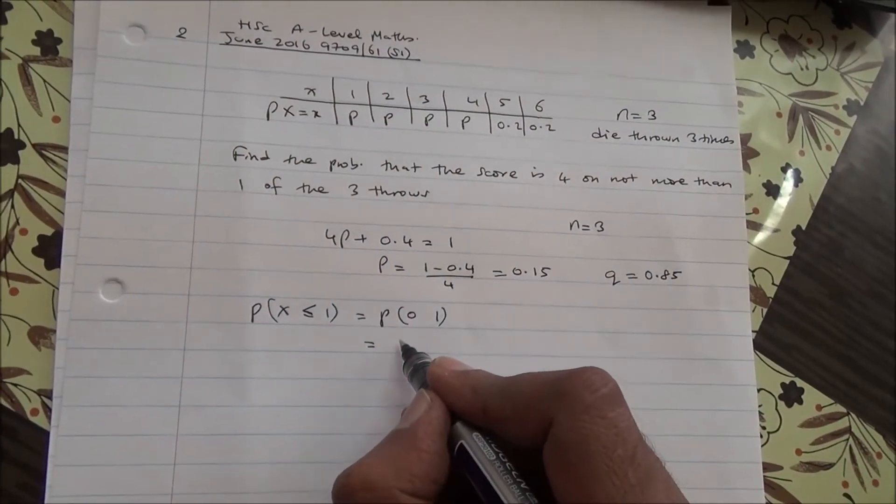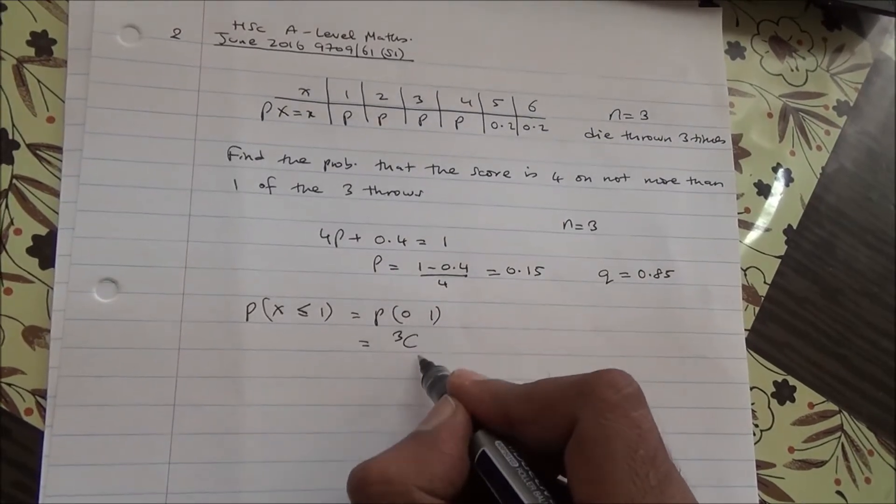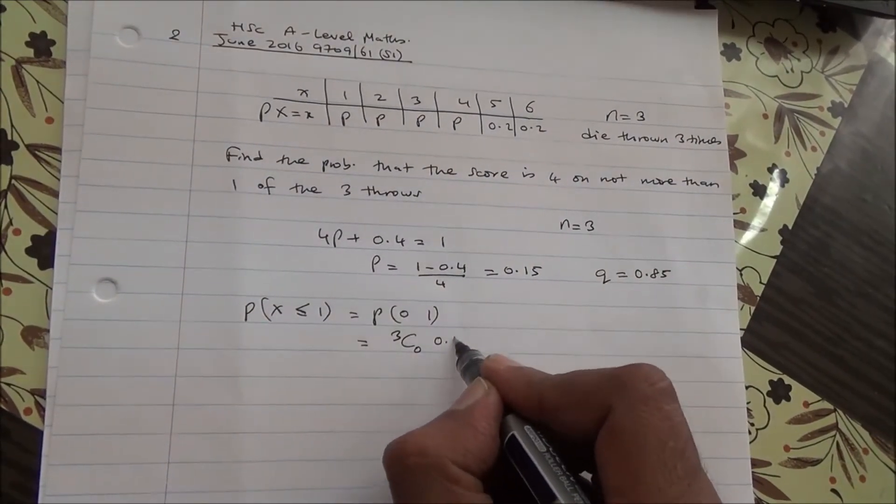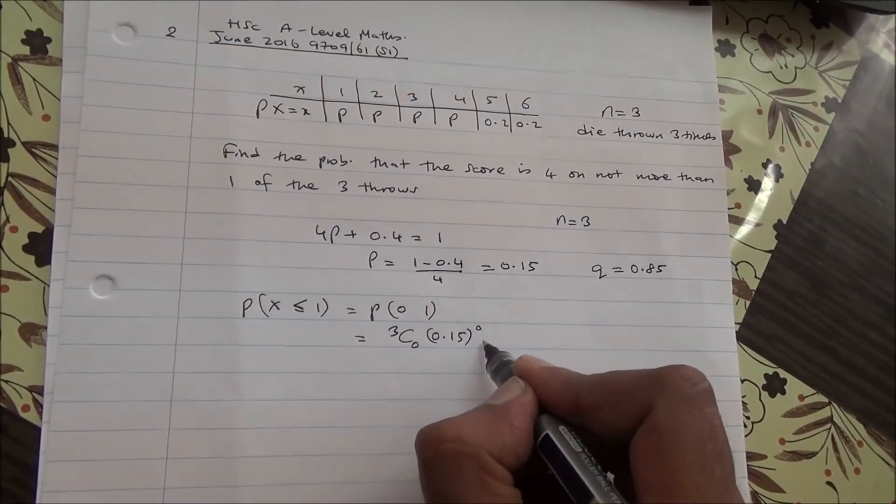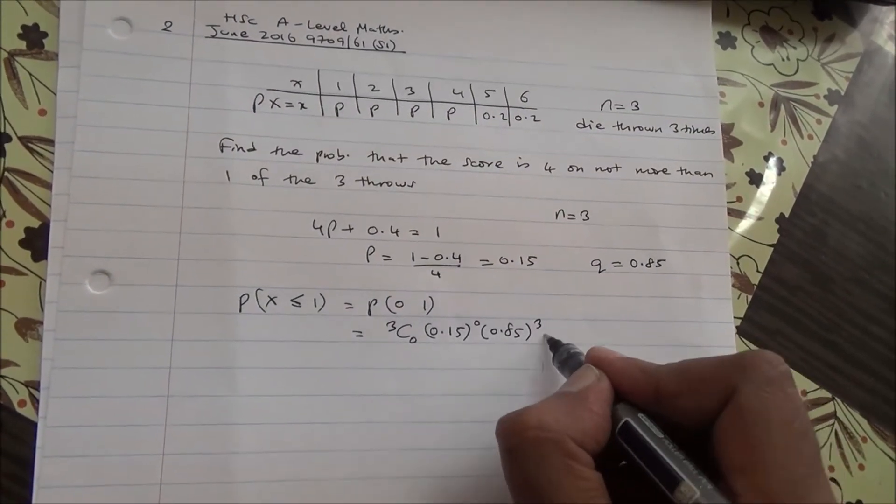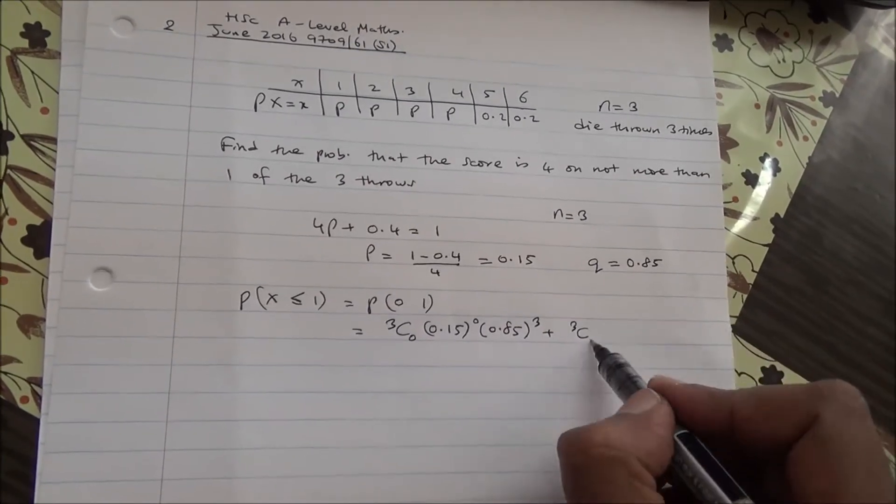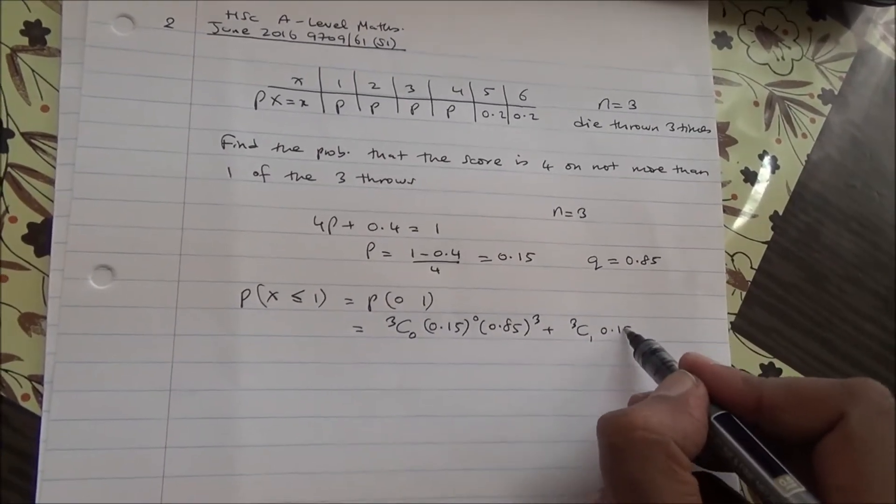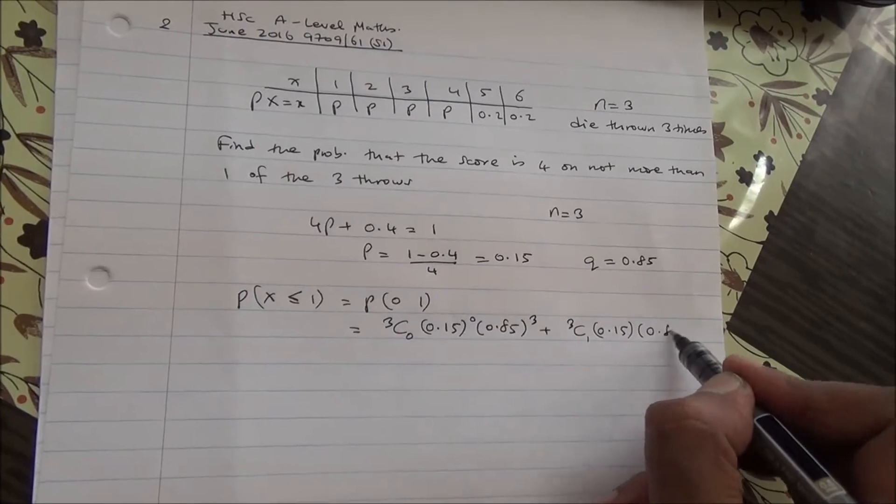That's going to be 3C0, 0.15 to the power of 0, times 0.85 to the power of 3, plus 3C1, times 0.15, and 0.85 to the power of 2.